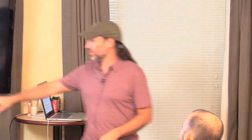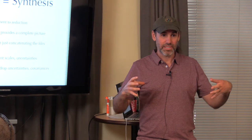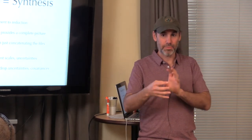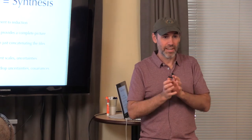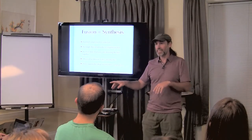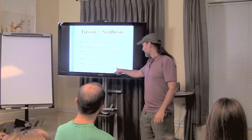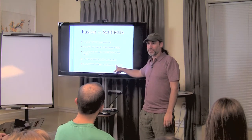It's worth discussing data fusion because in the literature there are many naive approaches that simply drop uncertainties and covariances. There was a time when many thought the right way to build a model was to build models for each sub-component, put them together, and assume the result would produce the right prediction. But when you calibrate each part independently, you don't estimate the covariances between them — and those covariances are often essential.